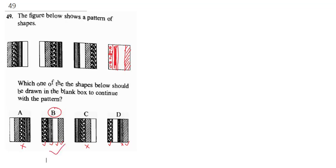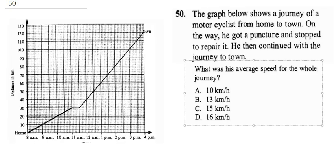Question 50 says the graph below shows a journey of a motorcyclist from home to town. On the way he got a puncture and stopped to repair it, then continued with the journey to town. What was his average speed for the whole journey? All you need to know is average speed is total distance over total time.